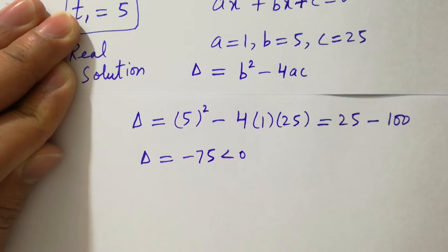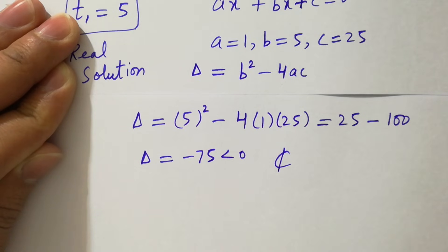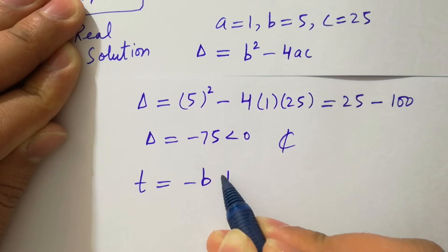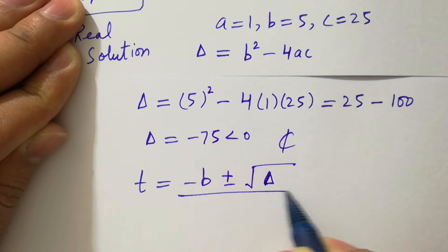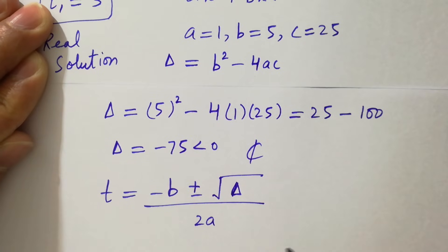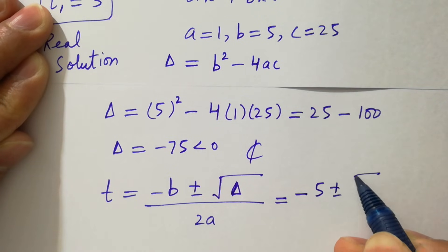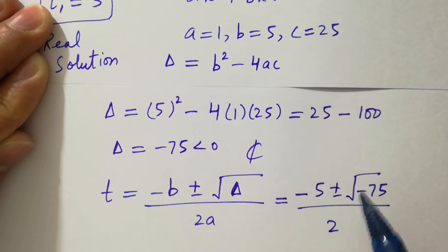The discriminant is negative, so it means it will give us complex solutions. Applying the quadratic formula, t equals minus b plus or minus square root of the discriminant over 2a. Putting in the values, we have minus 5 plus or minus square root of minus 75, over 2.